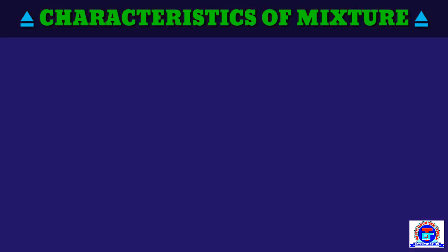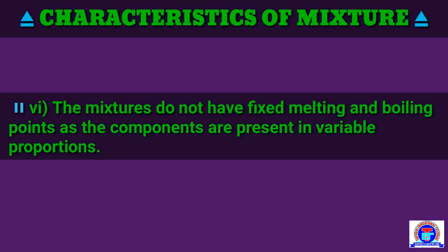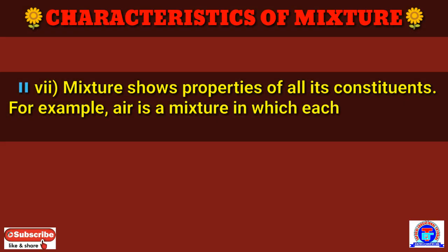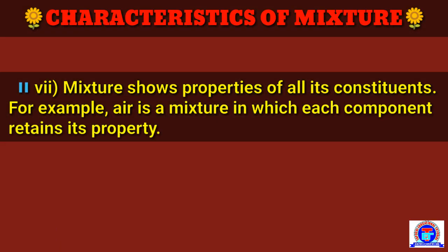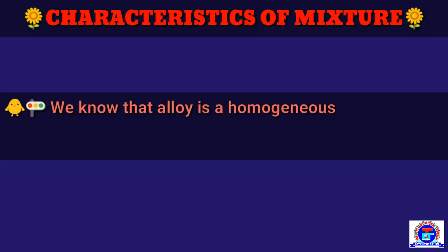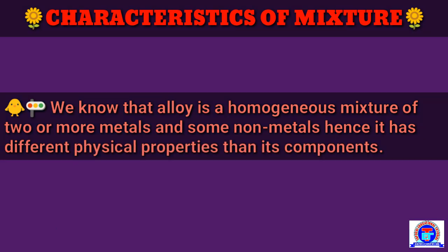Number 6: mixtures do not have fixed melting and boiling points, as the components are present in variable proportions. Number 7: a mixture shows properties of all its constituents — each component retains its properties. For example, an alloy is a homogeneous mixture of two or more metals and some non-metals; hence it has different physical properties than its individual components.